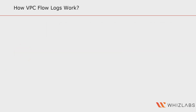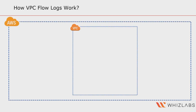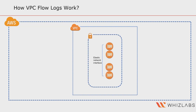Now let us see how VPC Flow Logs work. In this diagram, you have the AWS Cloud and within it we have our VPC. Within the VPC, we have various subnets containing different network interfaces such as EC2 instances. When we enable VPC Flow Logs, you can configure it to capture metadata about every IP packet that flows through the VPC from various sources such as other AWS accounts or other VPC peering connections.